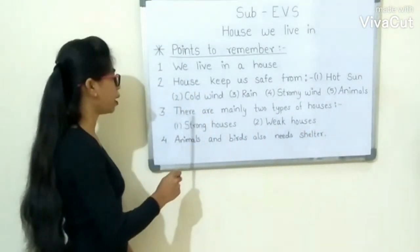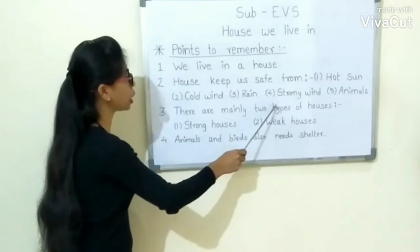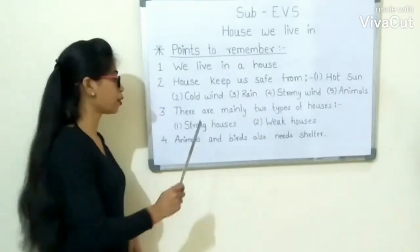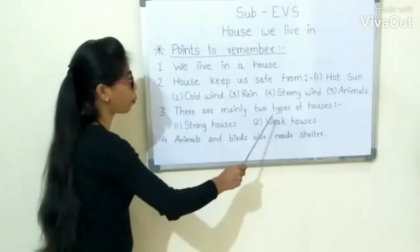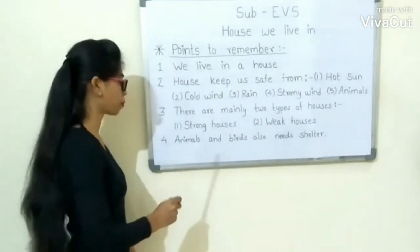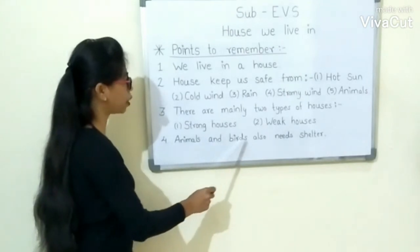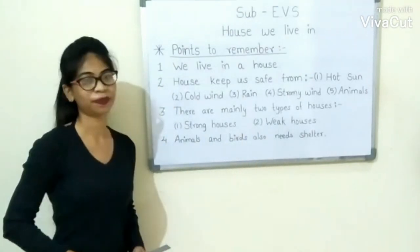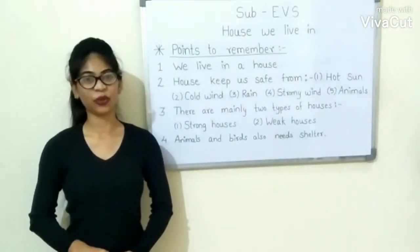Third, there are mainly two types of houses: first is strong houses, second is weak houses. Fourth, animals and birds also need shelter. Stay safe and healthy. Thank you.